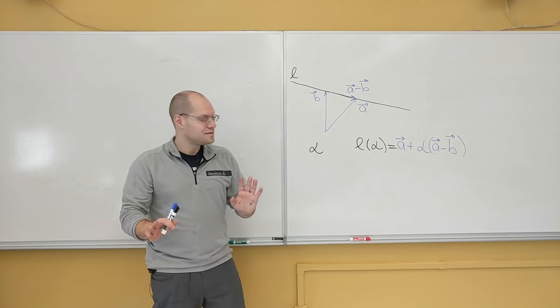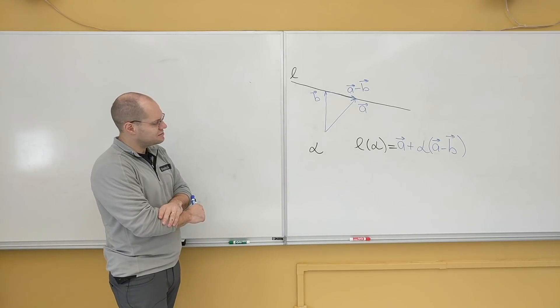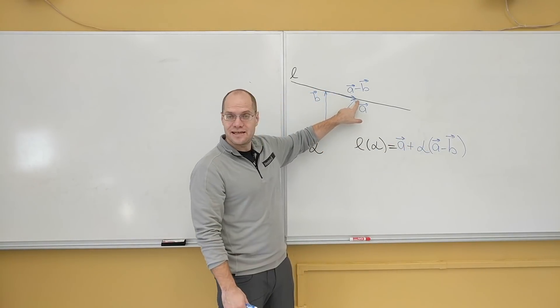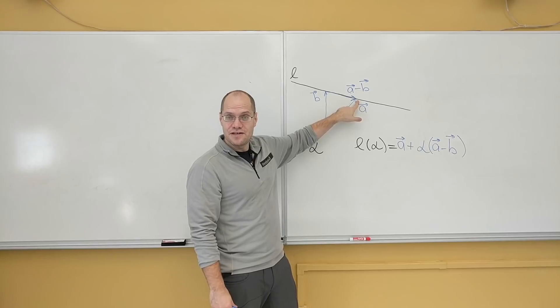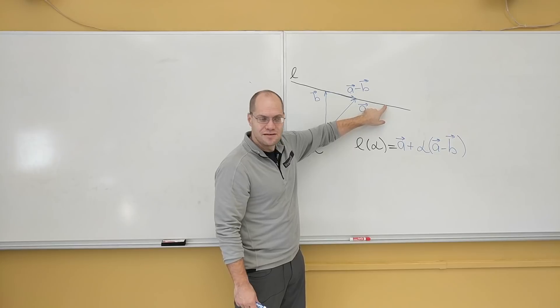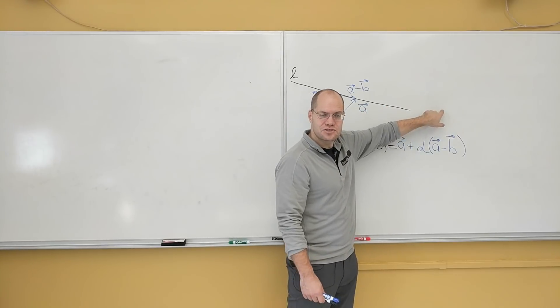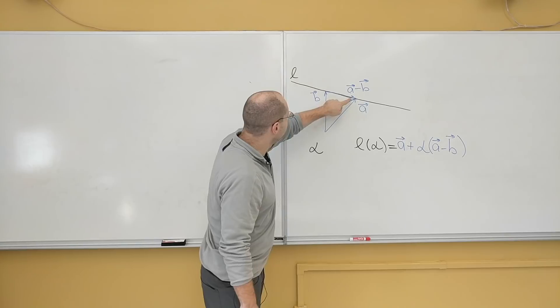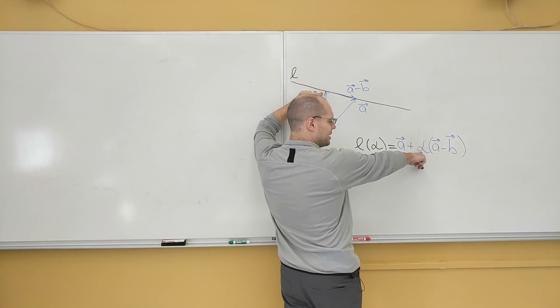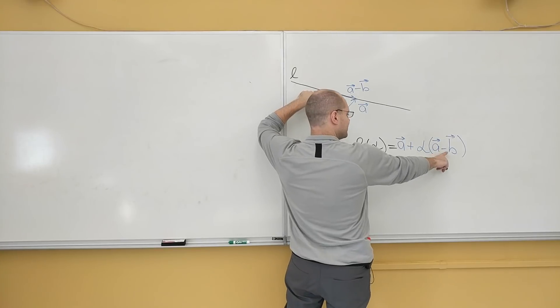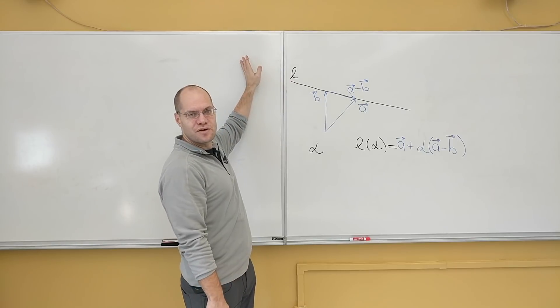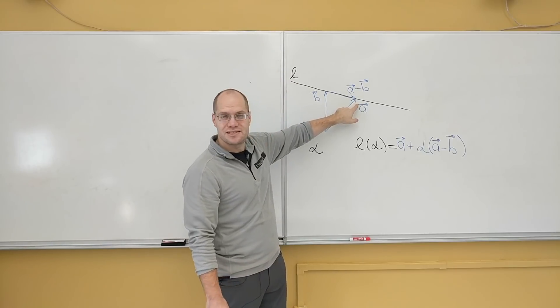And please note that it makes total sense. Because when alpha is 0, you're at A. So you're right here. When alpha is 1, you have to add to A, A minus B. So you'll end up here. Then alpha equals 2 puts you here. Alpha equals 3 puts you here. Alpha equals minus 1 puts you right at B. And you can see that. Plug in minus 1 and you algebraically get A's cancel, you get B. Alpha equals minus 2 will put you here and so forth.